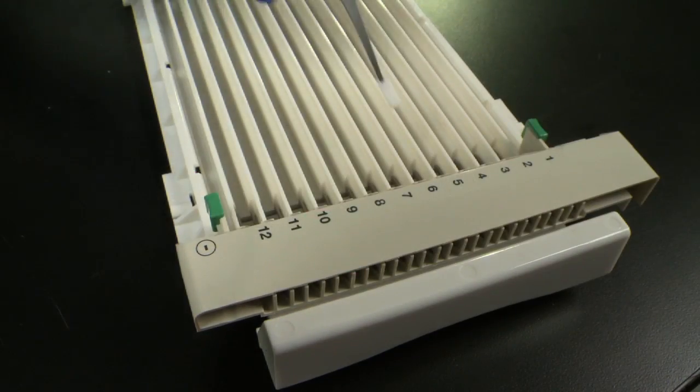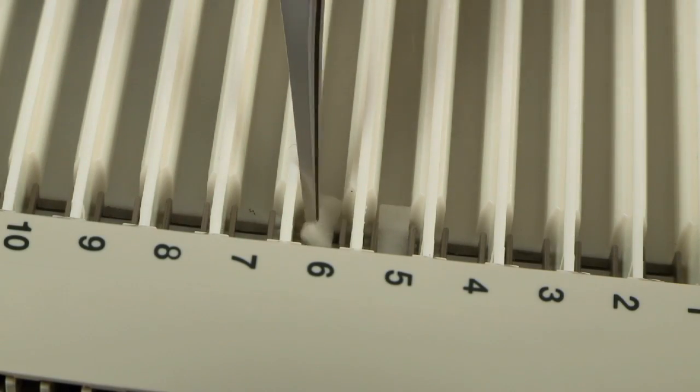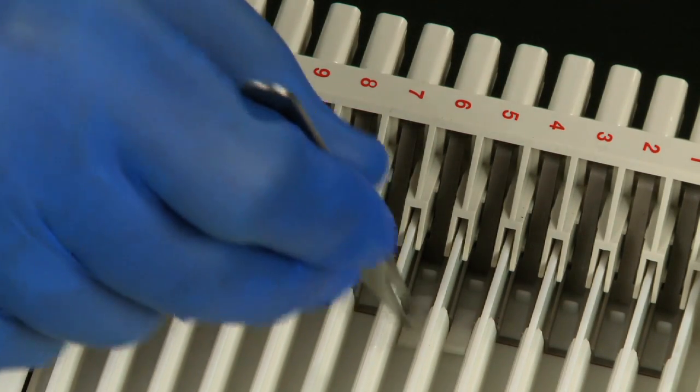At this point, you can add electrode wicks if you choose. Pre-wet the wicks and place them at the ends of the tray.